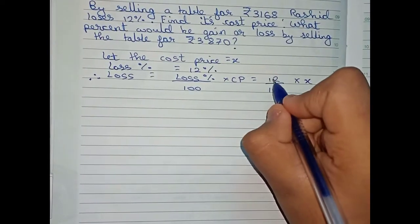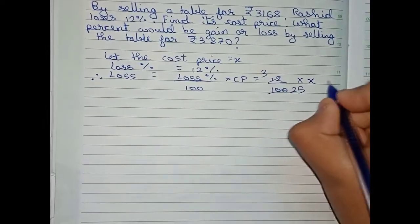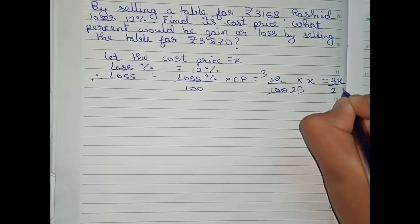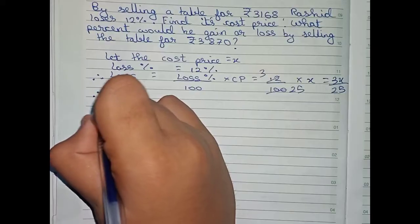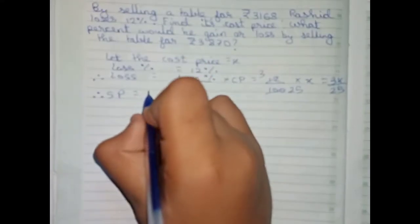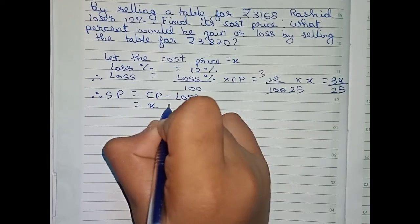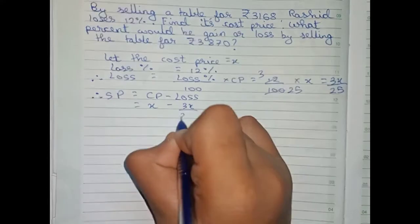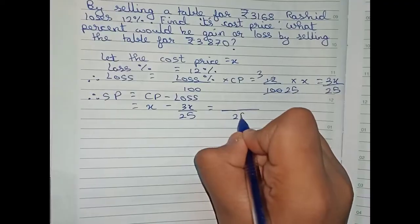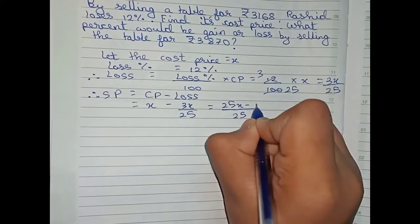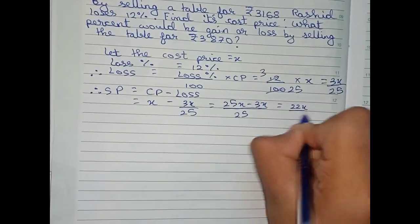Now we simplify 12 and 100 by dividing both by 4, so it becomes 3 by 25, giving us loss equals 3x by 25. Now we find SP using the formula: SP equals CP minus loss, which is x minus 3x by 25. Taking 25 as LCM gives 25x minus 3x, which equals 22x by 25.